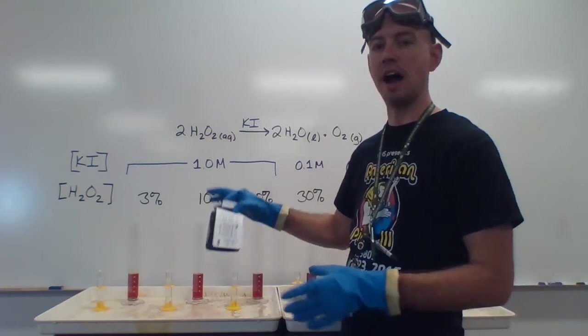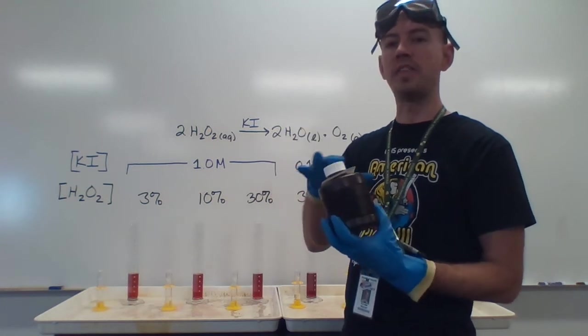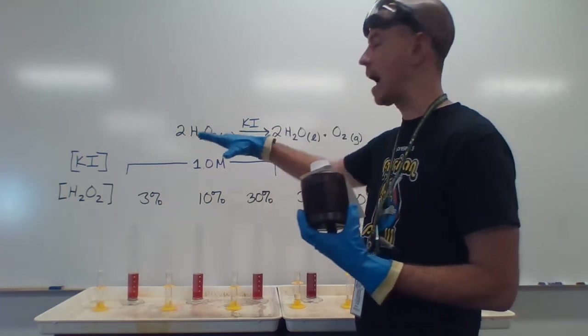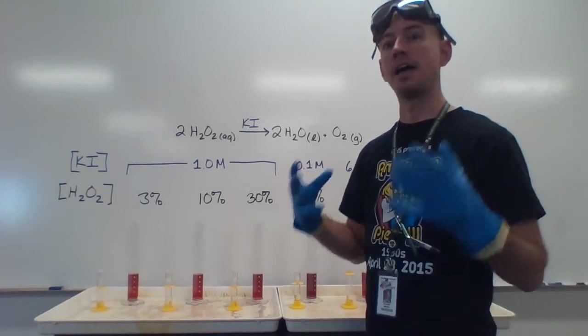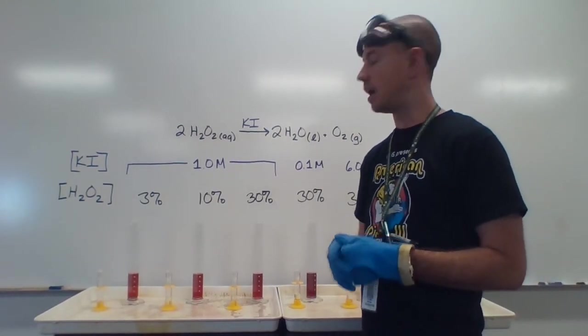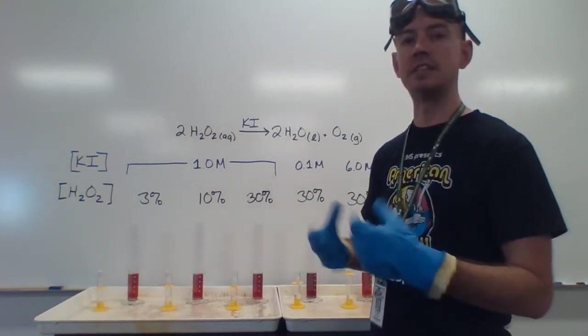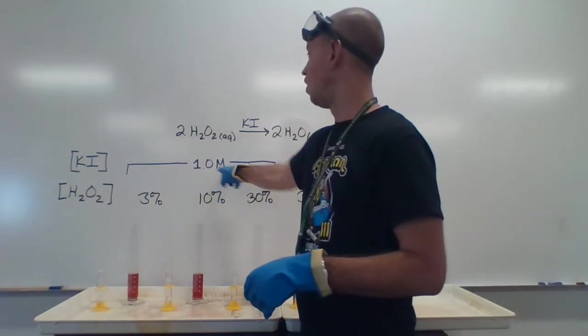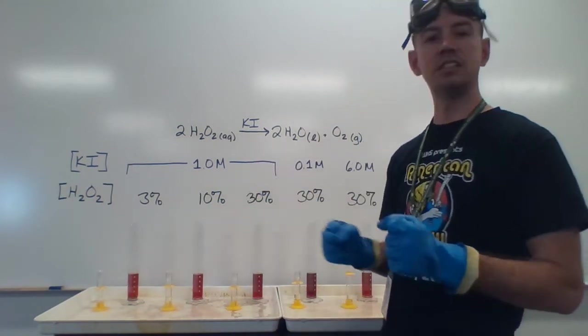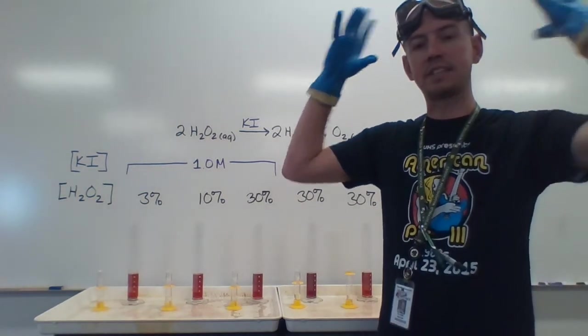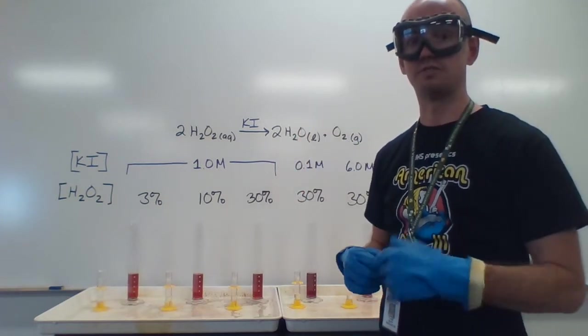30% hydrogen peroxide comes in a special bottle that's either an accordion bottle here or that has a special cap because as this decomposition happens over time, the oxygen gas can build up and the pressure can build up. In the first three, I have the same amount and same concentration of potassium iodide. It's all one molar. So we're going to start with that, see how increasing the concentration of hydrogen peroxide with the same catalyst and the same amount of catalyst changes the rates of reaction.